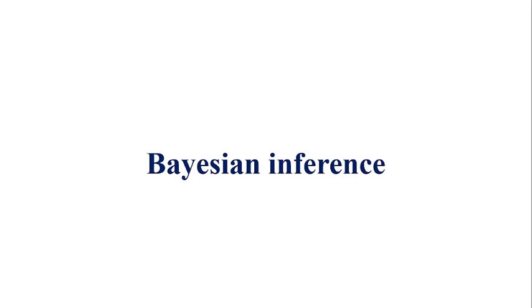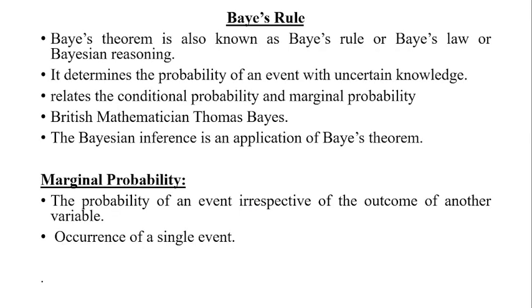Hi everyone. Today we are going to see about Bayesian inference. First we can see what is Bayes' rule. Bayes' theorem is also known as Bayes' rule, Bayes' law, or Bayesian reasoning. It determines the probability of an event with uncertain knowledge. In probability theory, it relates the conditional probability and marginal probability of two random events. It was named after the British mathematician Thomas Bayes. The Bayesian inference is an application of Bayes' theorem.